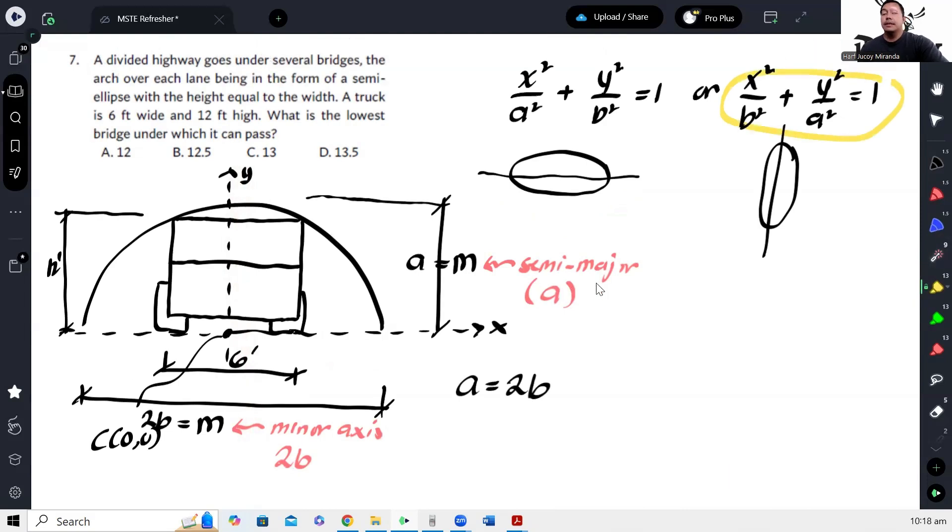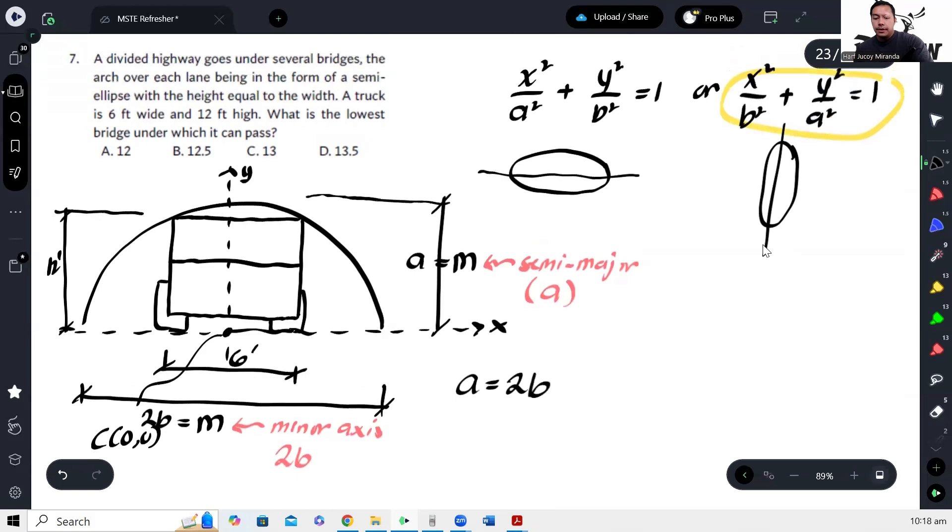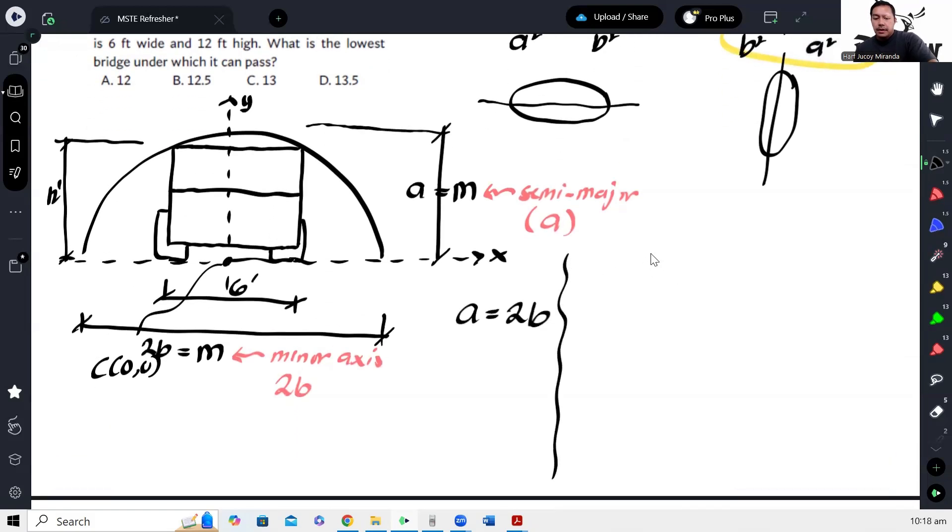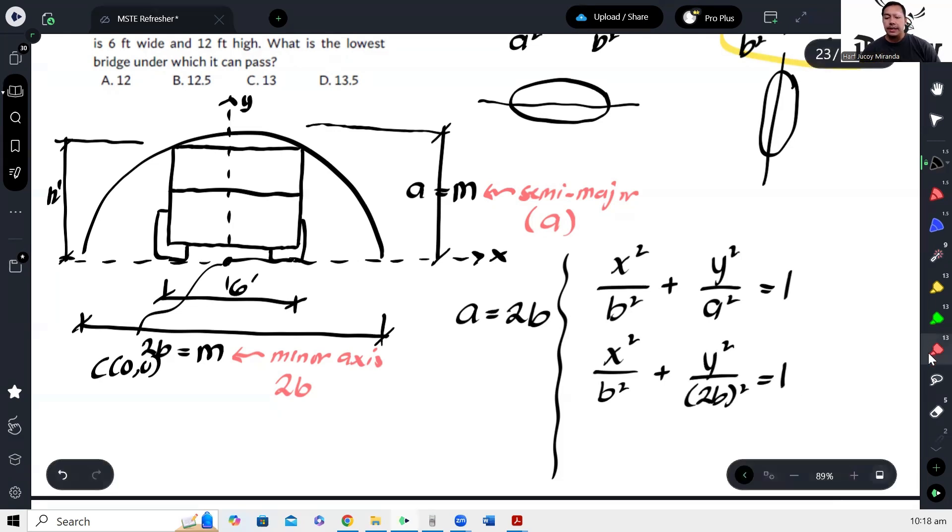Therefore, we can apply x squared over B squared plus y squared over A squared equals 1. This is the equation of the ellipse. Now, we also know that A equals 2B, so therefore x squared over B squared plus y squared over 2B squared equals 1. And then to solve for A, we can first solve for B using coordinates. Since I positioned the truck snugly, this corner of the truck is right on the ellipse.